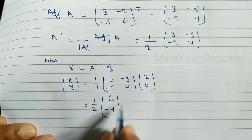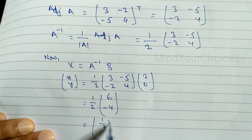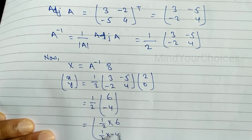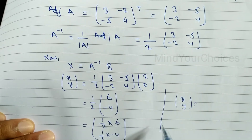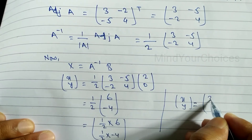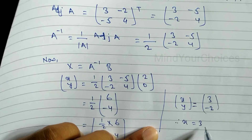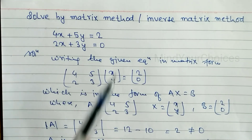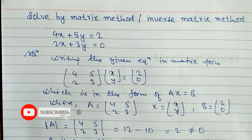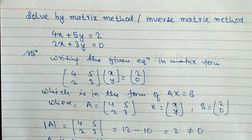Multiplying each element by 1/2: (1/2)×6 = 3 and (1/2)×(−4) = −2. So [x, y] = [3, −2], meaning x = 3 and y = −2 is the answer. Hope you understand this video on how to solve equations by the matrix inverse method, which is very important for class 10 and class 11. Thanks for watching and keep supporting!